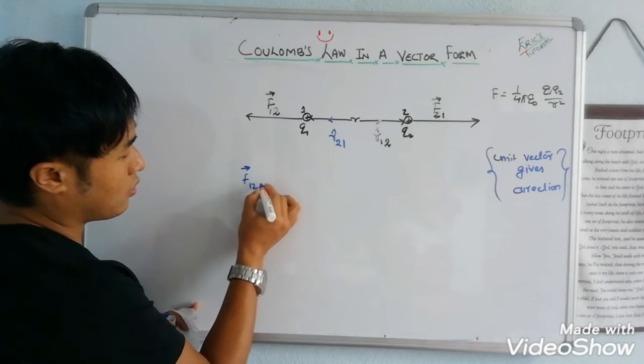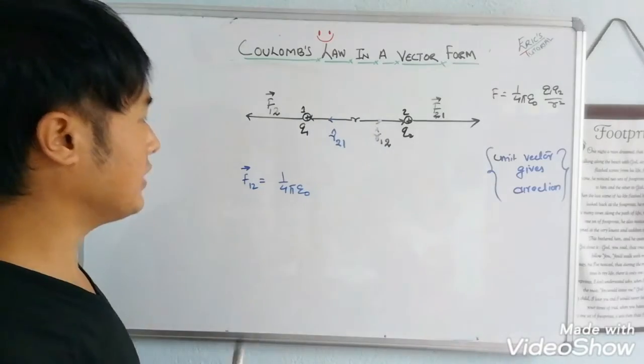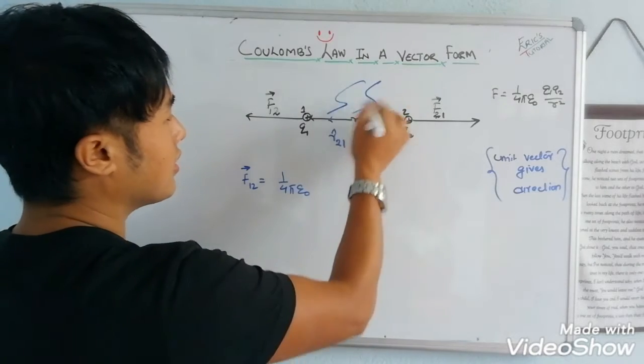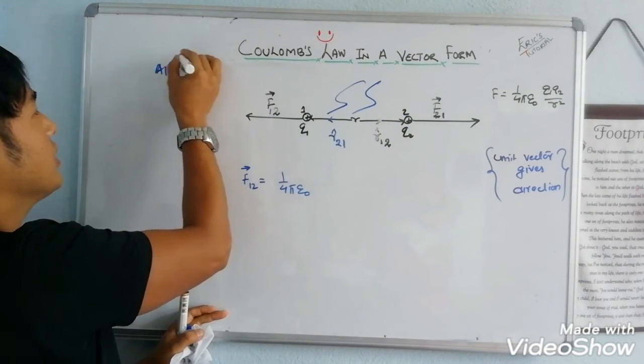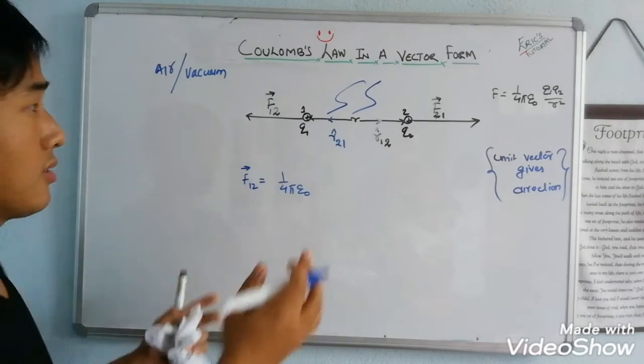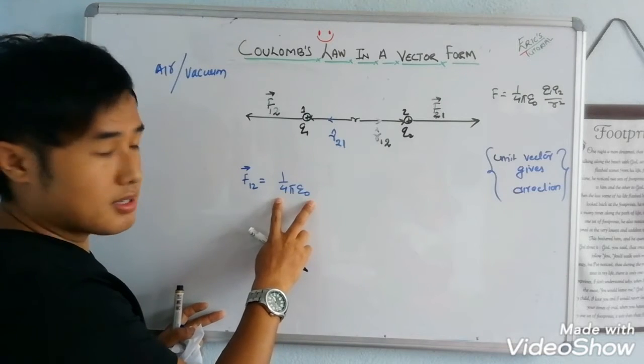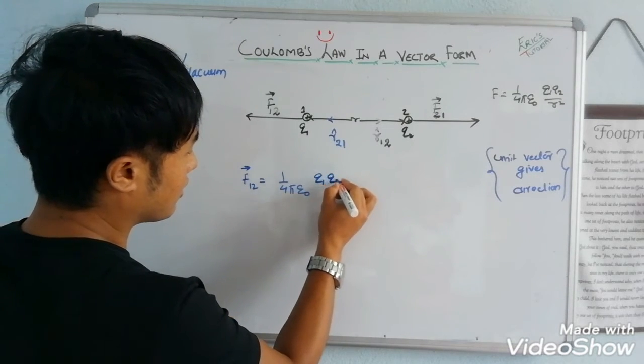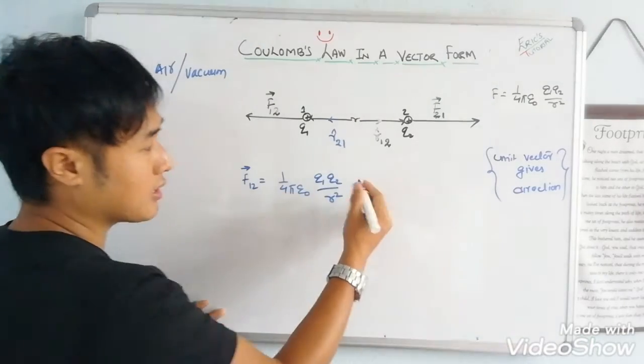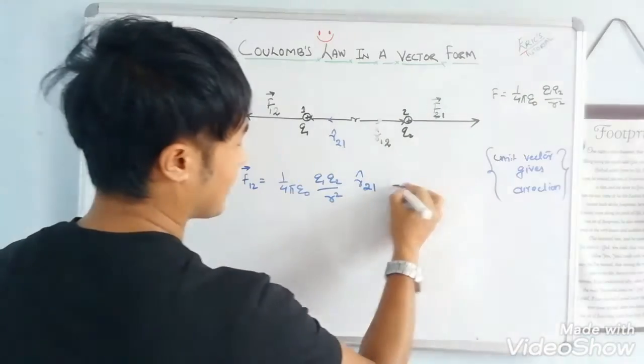F vector 1,2 equals to 1 by 4πε₀. Epsilon naught is the absolute permittivity. This is for free space, air or vacuum. 1 by 4πε₀ is Coulomb's constant. q1 q2 by r square. F1,2 direction is given by R cap 2,1. This is equation 1.